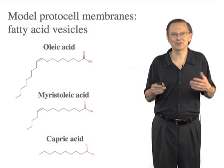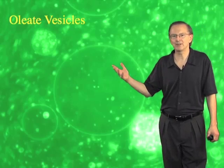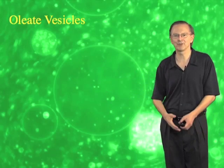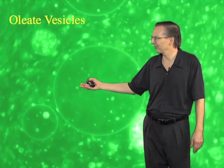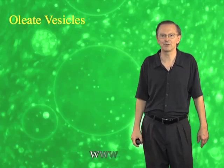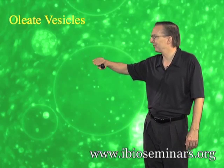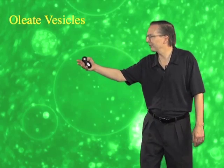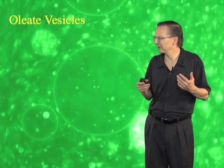So what happens if you just take one of these fatty acids and shake it up in water with some salt and buffer? Is it hard to make membranes? No. You spontaneously make vesicles in a huge variety of complex structures and a huge range of sizes, all the way from 30 microns — this large vesicle — down to 30 nanometers. Many of these vesicles are composed of multiple sheets of membrane, stacks of membranes. Some vesicles have smaller vesicles inside them — it's a very heterogeneous, complex mixture.